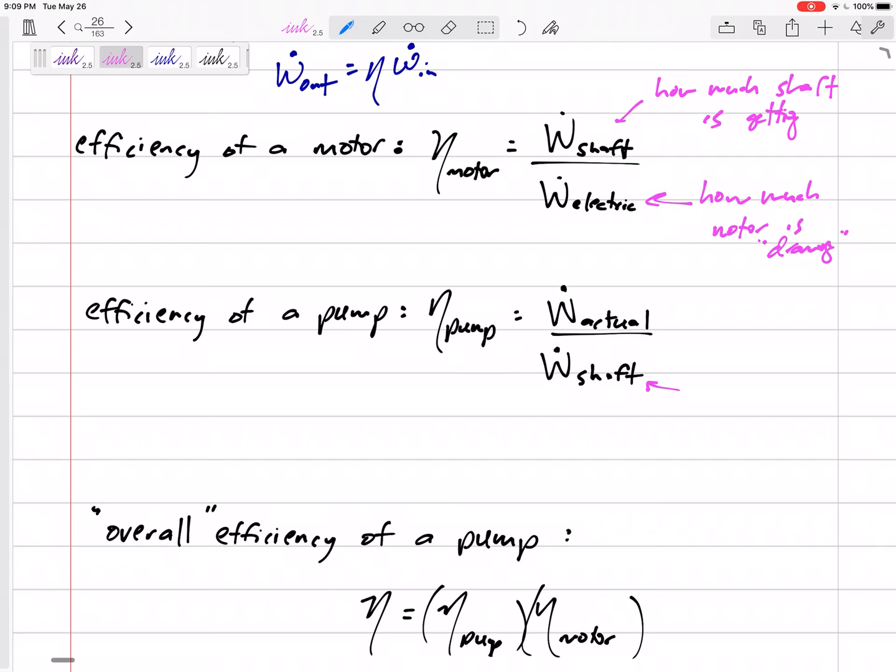The denominator is the work put into the pump by the shaft of the motor. And then this numerator is how much work is actually being accomplished.